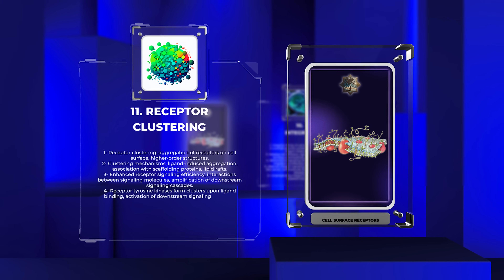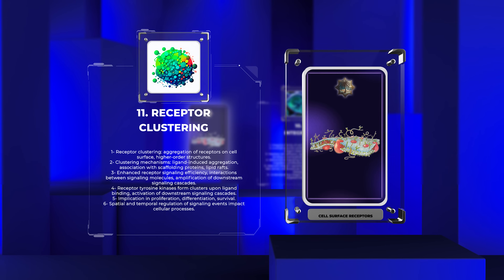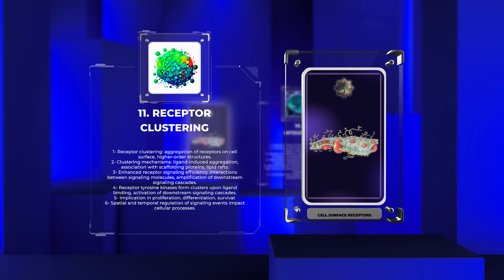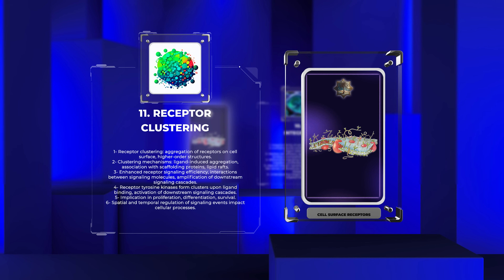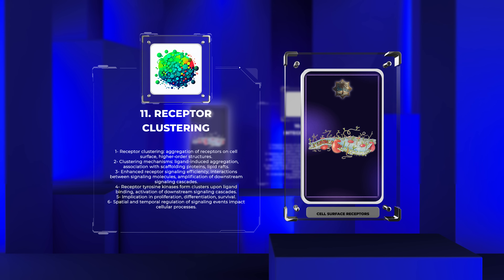Receptor clustering refers to the aggregation of receptors on the cell surface, resulting in the formation of higher-order structures. This clustering can occur through various mechanisms, including ligand-induced aggregation, receptor association with scaffolding proteins, or lipid rafts. Receptor clustering enhances receptor signaling efficiency by promoting interactions between signaling molecules and amplifying downstream signaling cascades. It also allows for cooperative effects and crosstalk between different signaling pathways. For example, receptor tyrosine kinases (RTKs) often form clusters upon ligand binding, leading to the activation of downstream signaling cascades and promoting cellular responses such as proliferation, differentiation, and survival. Understanding receptor clustering provides insights into the spatial and temporal regulation of signaling events and their impact on cellular processes.